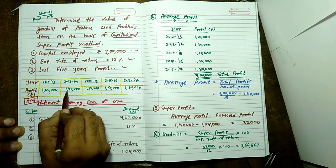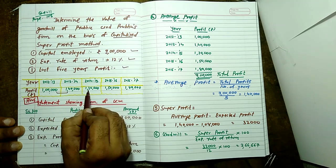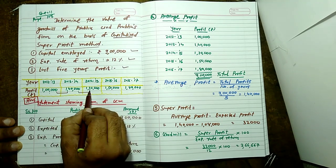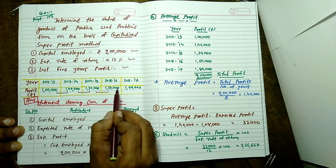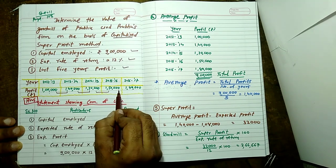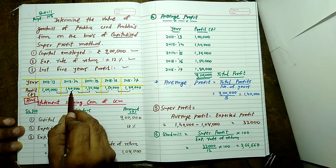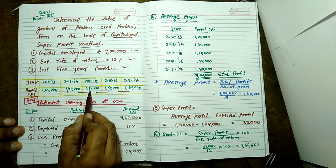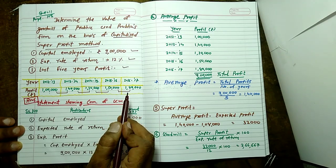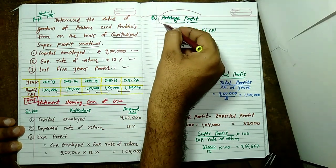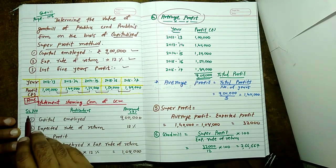2013-14: 1 lakh 40,000. 2014-15: 1 lakh 30,000. 2015-16: 1 lakh 50,000. 2016-17: 1 lakh 80,000. Answer: statement showing computation of goodwill, serial number, particular, amount.